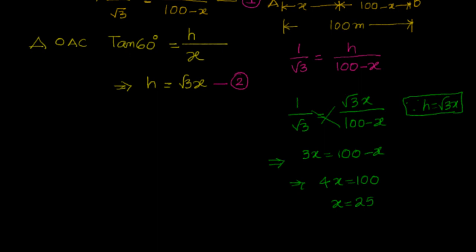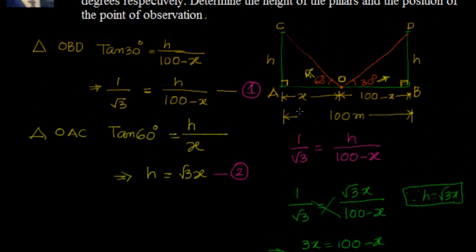So we are saying from one of the pillars at 25 meters, from the other pillar at a distance of 75 meters. If I compare with A, it's 25, if I compare with B, it is 75. I have the point which is making an angle of 30 degrees and 60 degrees respectively.